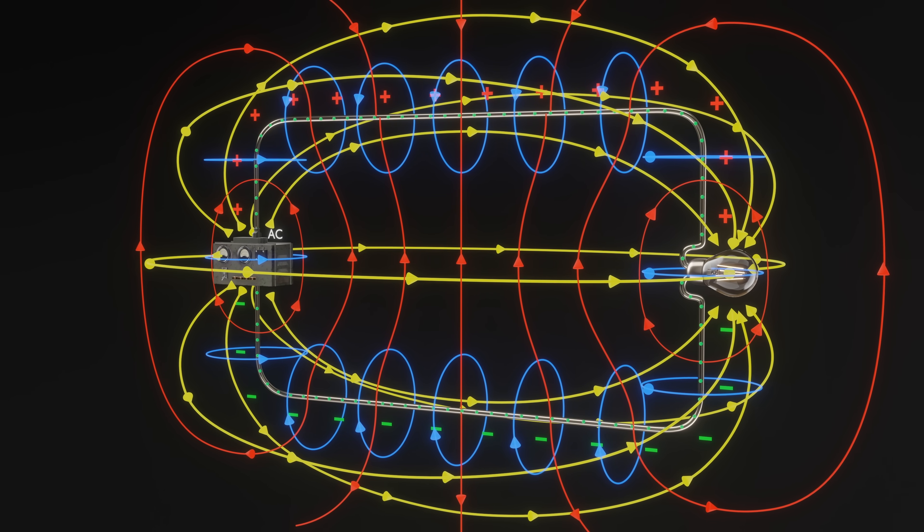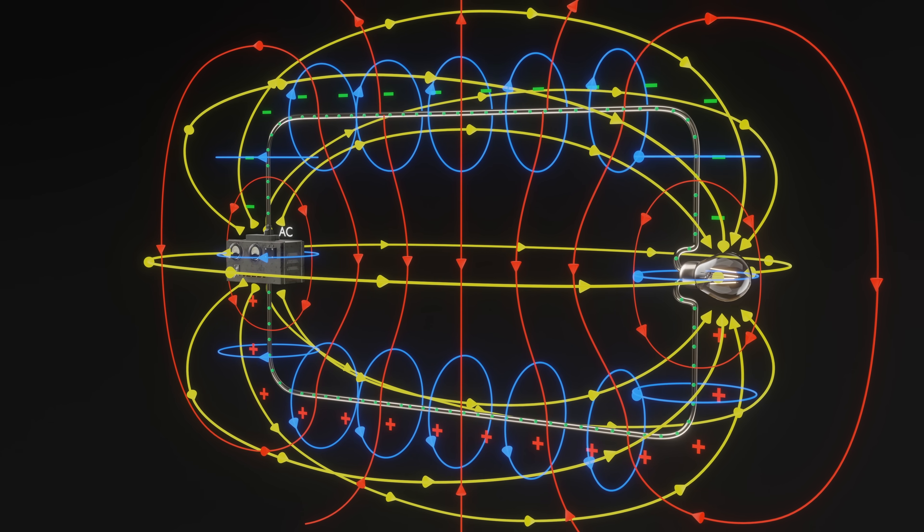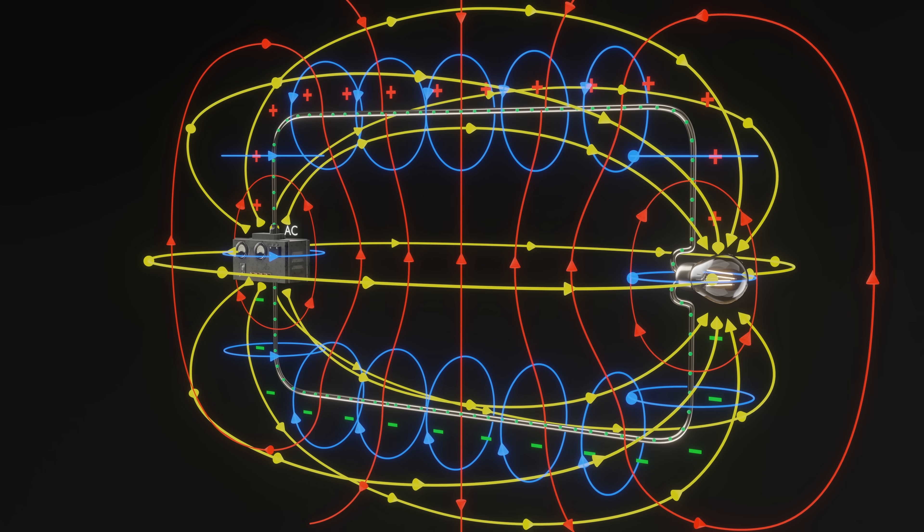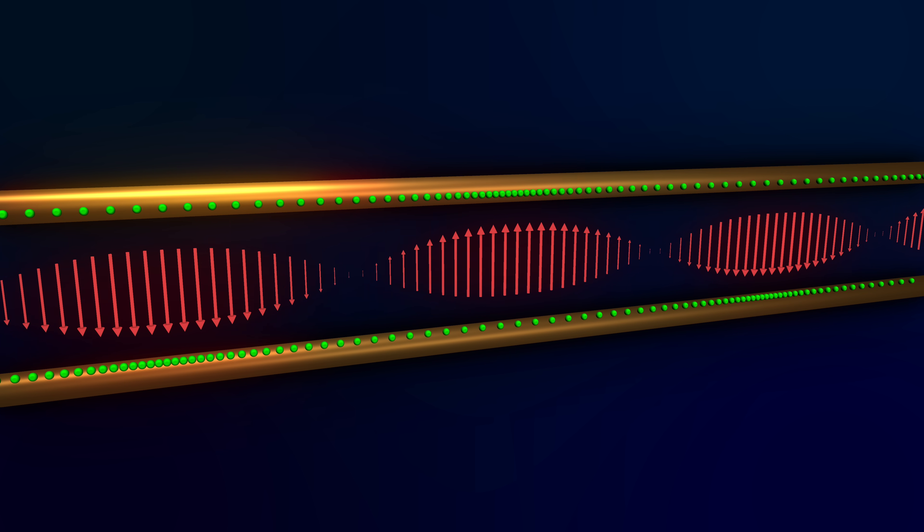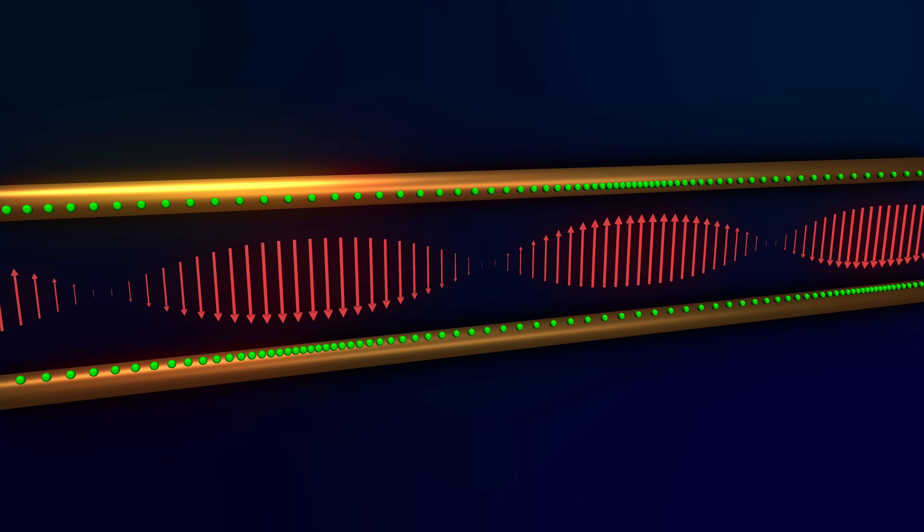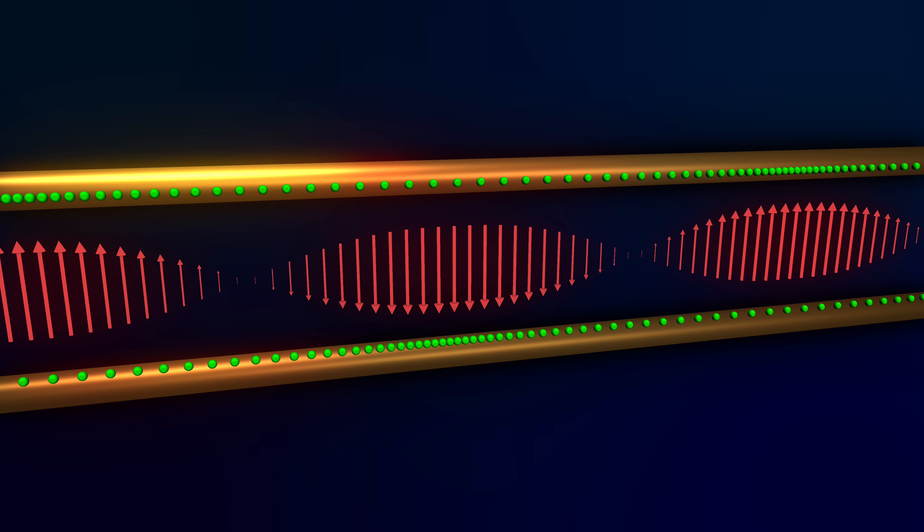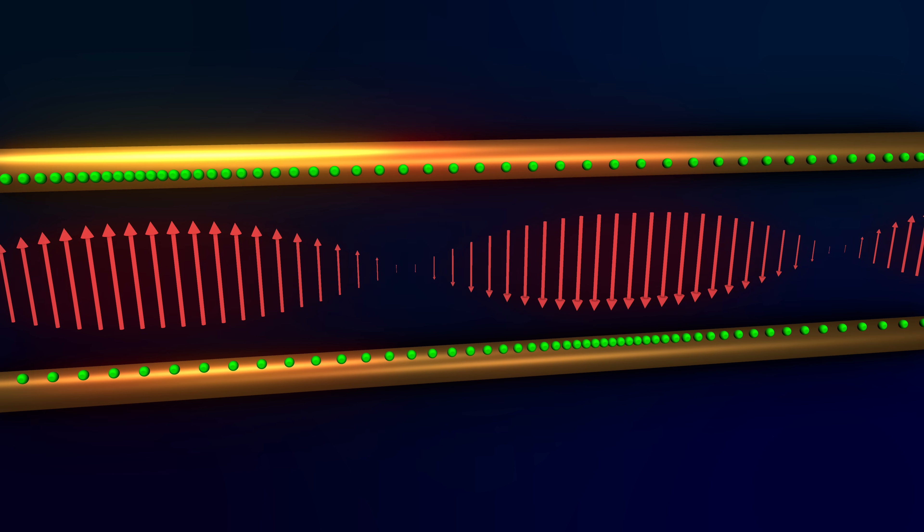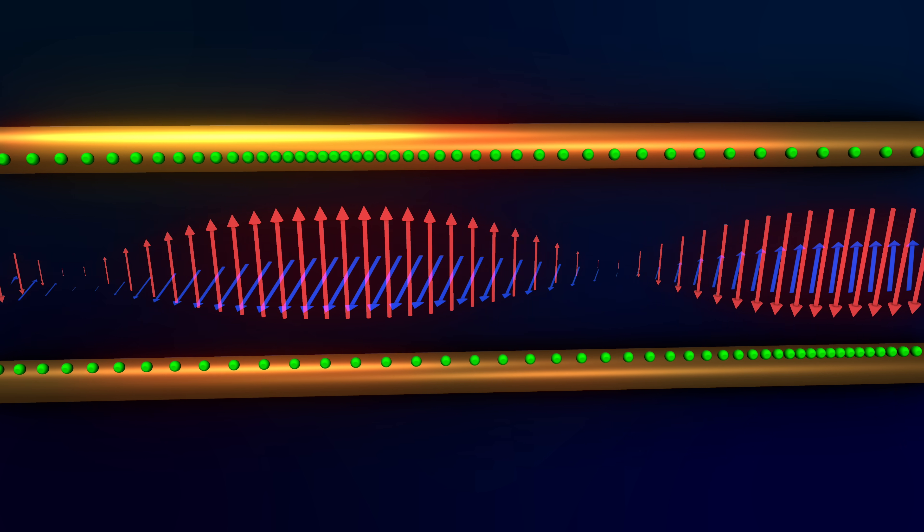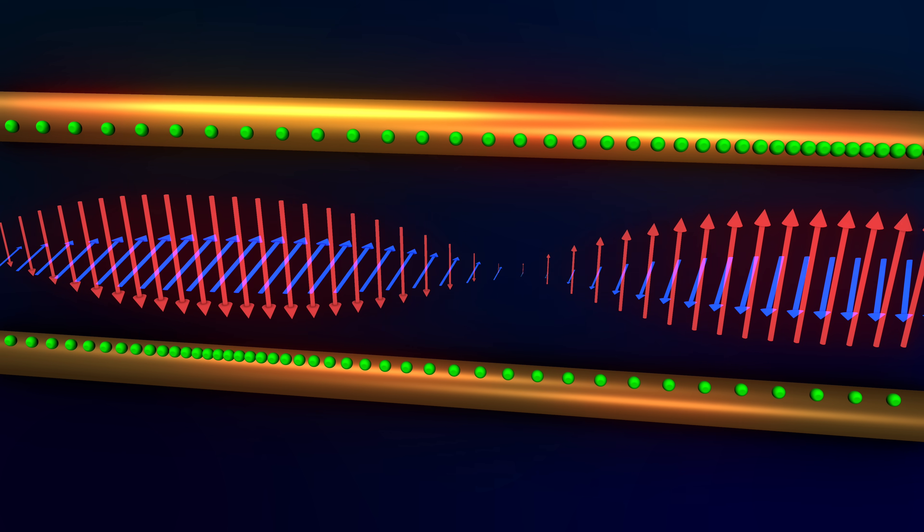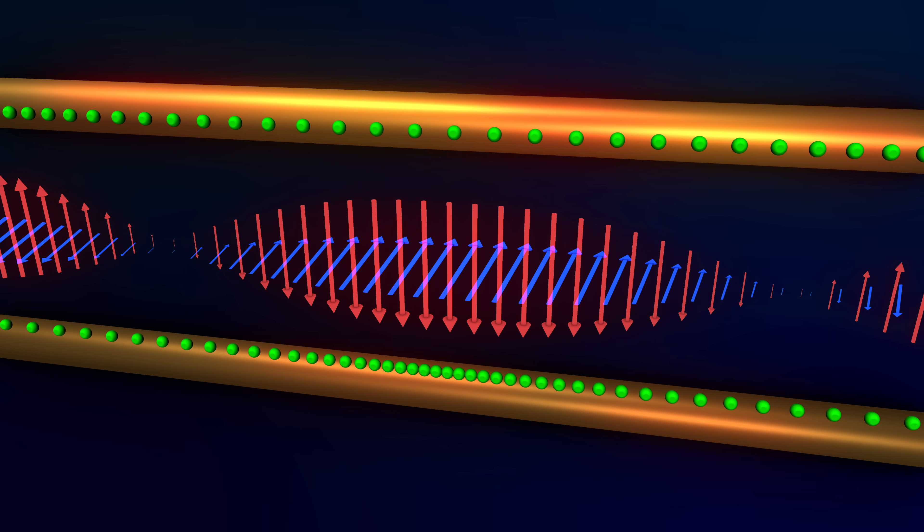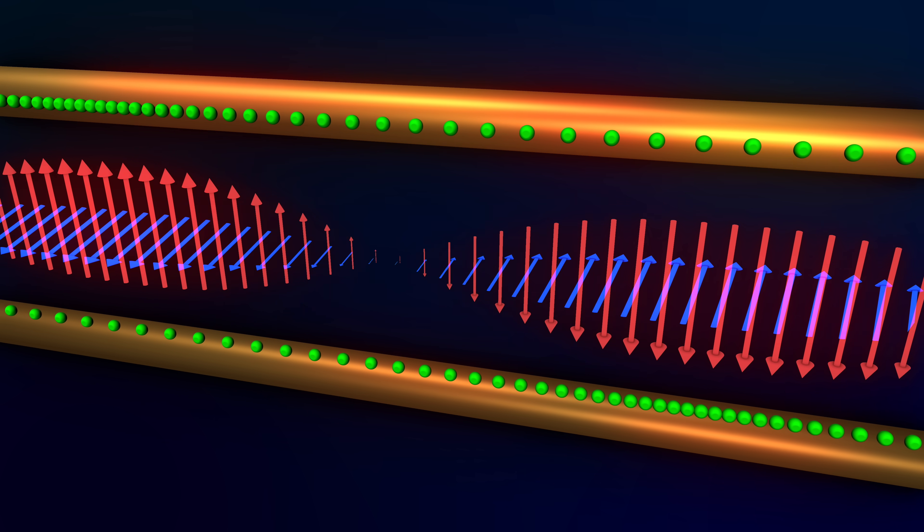And this explains how energy is able to flow from power plants to homes in power lines. Inside the wires, electrons just oscillate back and forth. Their motion is greatly exaggerated here. But they do not carry the energy. Outside the wires, oscillating electric and magnetic fields travel from the power station to your home. You can use the Poynting vector to check that the energy flux is going in one direction.